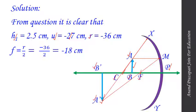We know that focal length F equals R divided by 2. Putting the value of R as minus 36 cm, we get F equal to minus 36 by 2, which after calculation gives us minus 18 cm. So the focal length of the concave mirror is minus 18 cm.